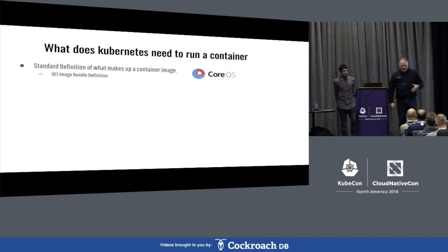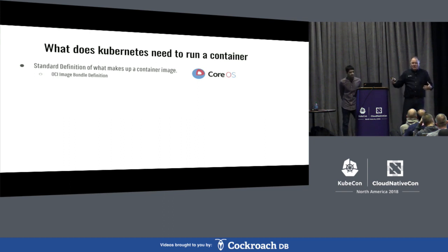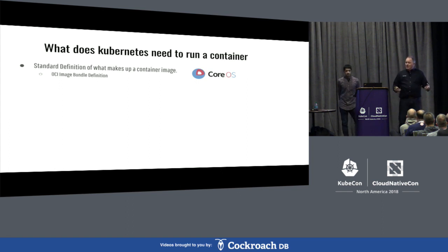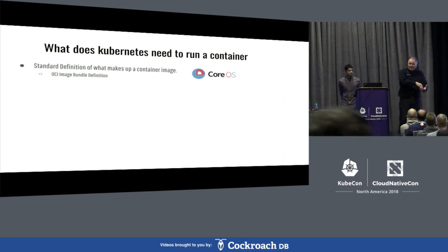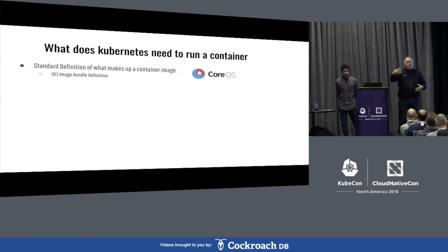What does Kubernetes need to do to run a container? First, it needs to identify what a container is. A container really means a container image. Docker invented the idea — basically a tarball and some JSON files describing what's inside: a root filesystem and a JSON file listing the entry point and environment variables. We needed a standard to define what goes in that JSON file.